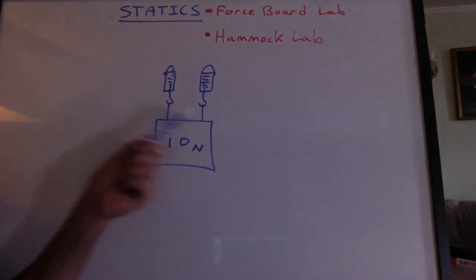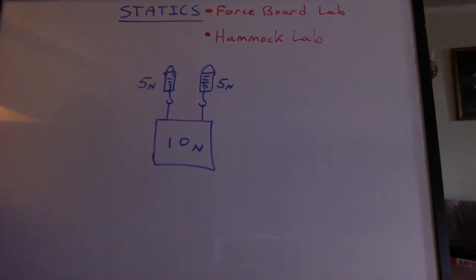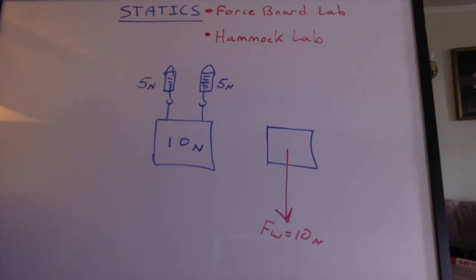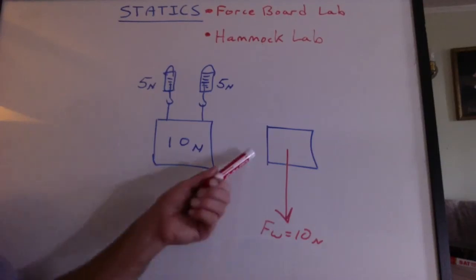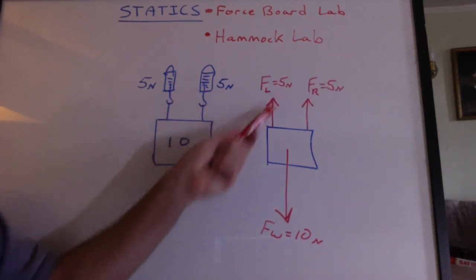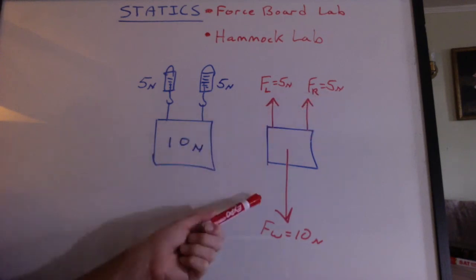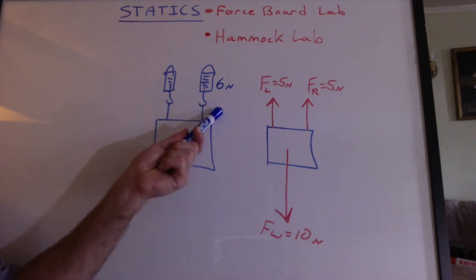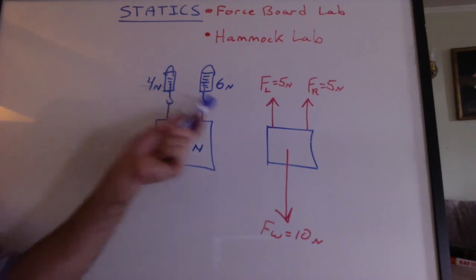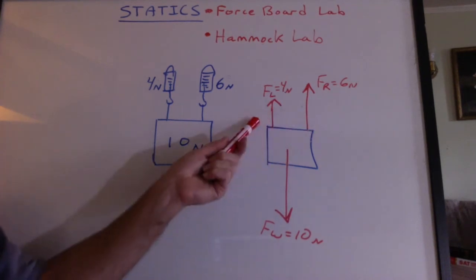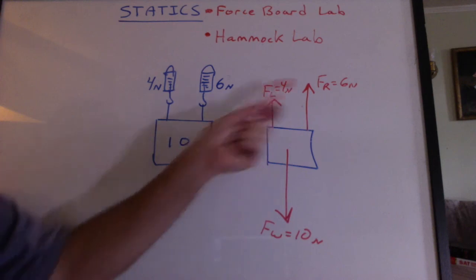Now let's take a look at an example with two spring scales holding up one object. I think you can imagine that each spring scale would be 5 newtons to hold up the 10. To draw a free body diagram, I don't need to draw the spring scales. I just draw the box. I draw the weight. And then I can label these force on the left side, 5 newtons. Force on the right side, 5 newtons. But might it be possible to pull up on one spring scale with 6 newtons? Then what would that one have to be? 4 newtons. Because the forces going up would have to cancel the forces going down.